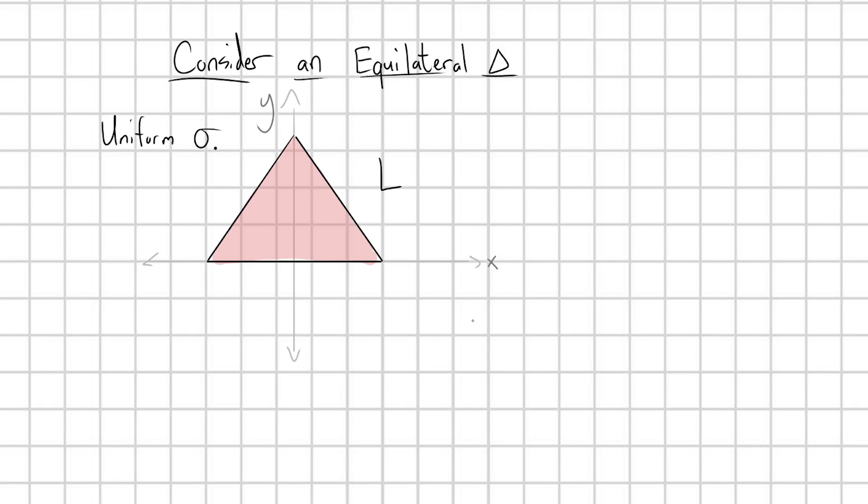All right, so now let's consider having an equilateral triangle here. And we know that it has a uniform mass density, area mass density we denote with σ.